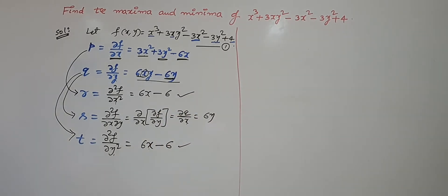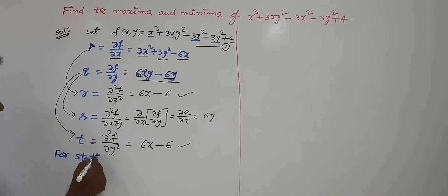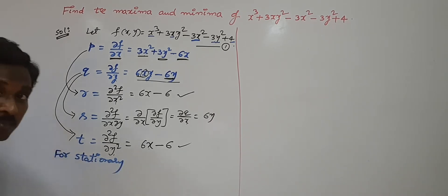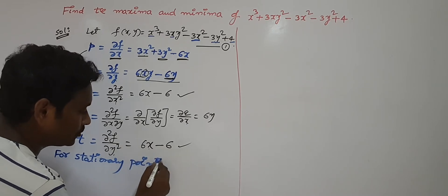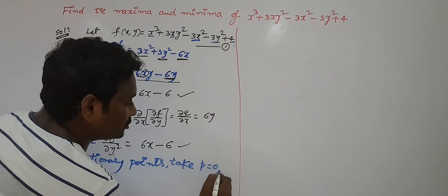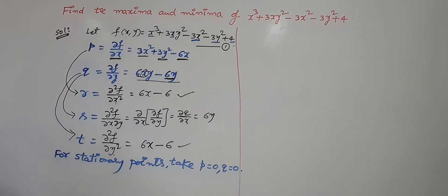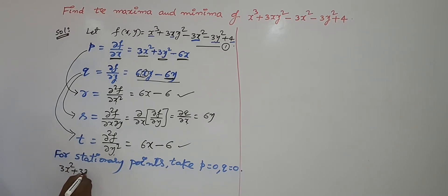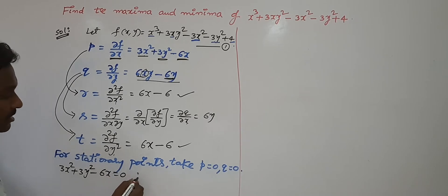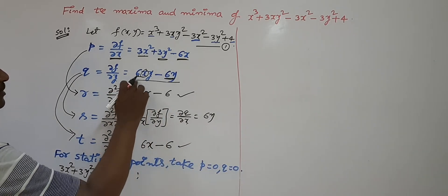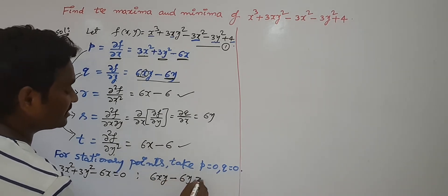Now we have to find out the stationary points. For stationary points, set the first order partial derivatives to zero: p = 0 and q = 0, because p and q are slopes of the given curve. When slopes are equated to 0, you get the stationary points. So p = 0 gives 3x² + 3y² - 6x = 0, and q = 0 gives 6xy - 6y = 0.